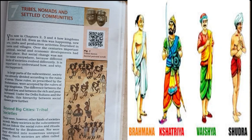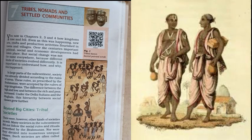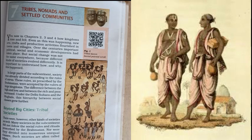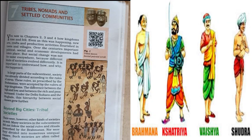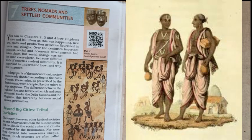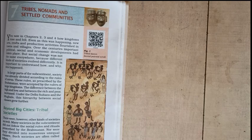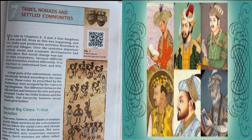In the large part of the subcontinent, society was already divided according to the rules of varna. These rules, as prescribed by the brahmanas, were accepted by the rulers of large kingdoms. The difference between the high and the low, and between the rich and the poor, increased day by day. Under the Dilli Sultans and the Mughals, this hierarchy between social classes grew further.